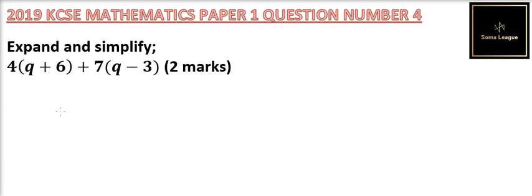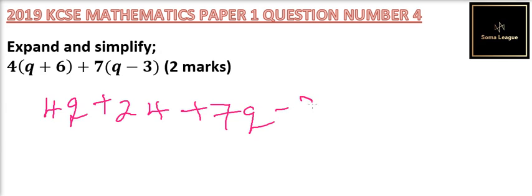So here you are supposed to expand and put the right terms together. We start by multiplying 4 times Q, so you get 4Q, then plus 4 times 6, that will give you 24. Then we have plus 7 times Q, that will give you 7Q, then you minus 21.